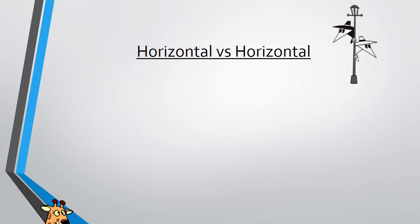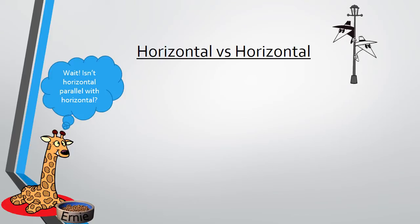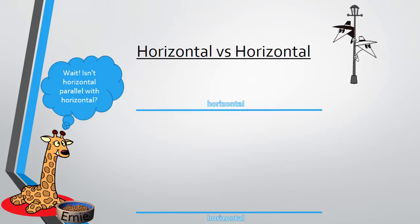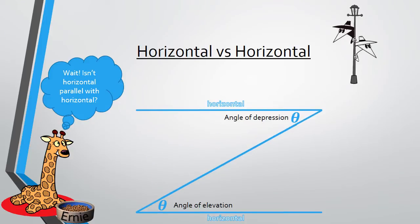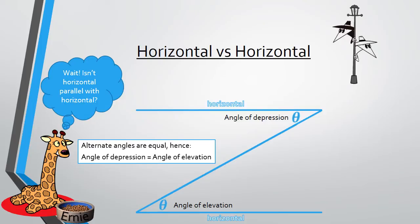Horizontal versus horizontal. Hey Ernie — isn't horizontal parallel with horizontal? Yes, it is, and if we look at two horizontal lines and we look at the angles of elevation and the angles of depression, they actually form a Z shape. We know from our study of transversals and parallel lines that a Z shape means the angles are called alternate angles, and alternate angles are equal. So angles of depression are equal to angles of elevation because they're alternate angles. Take a moment to copy that down.